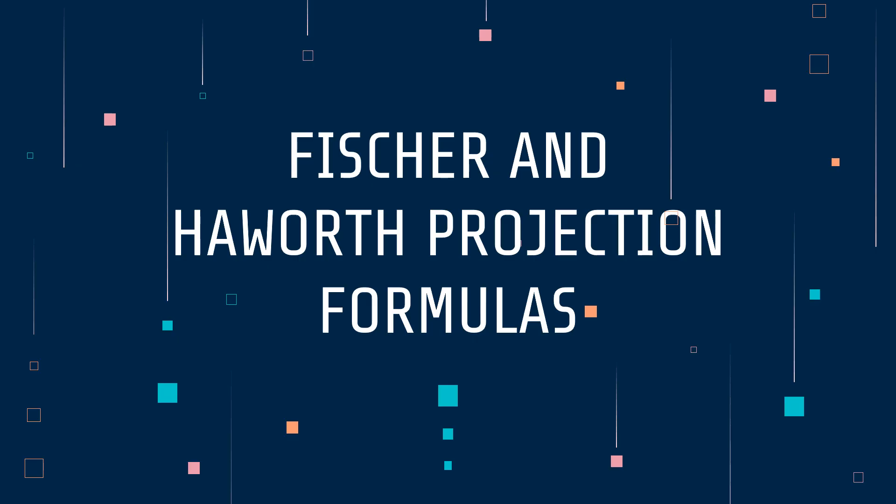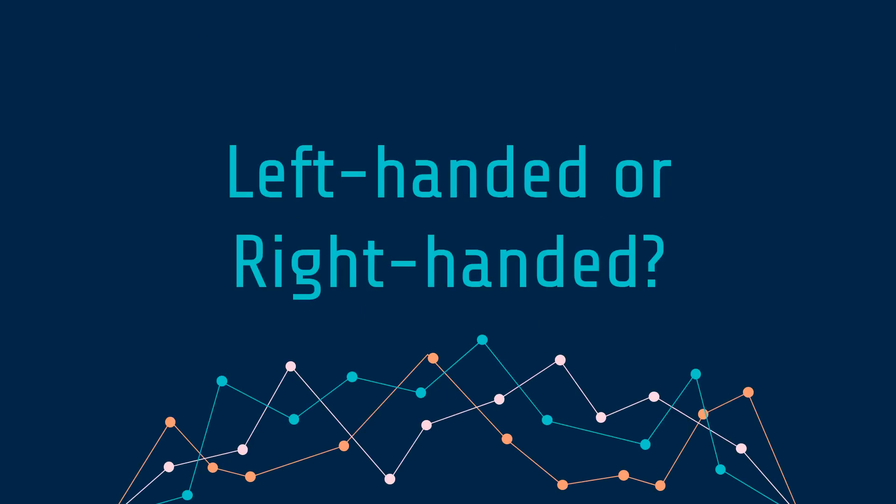Welcome to another Biochemistry 101. In this video, we are going to learn about Fischer and Haworth projection formulas. Which is which? How do you designate the D and L enantiomers?